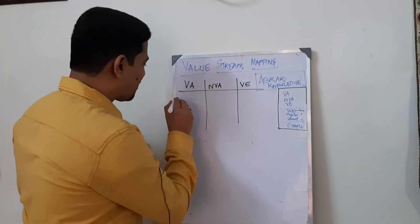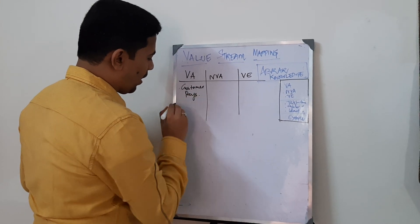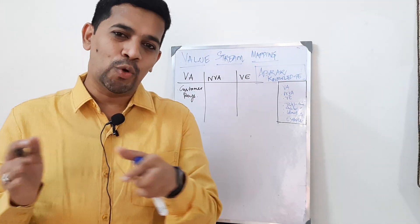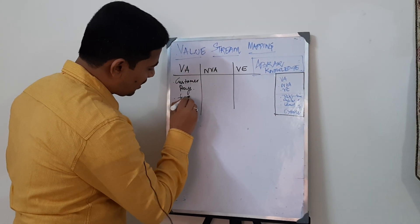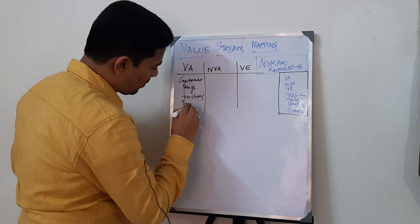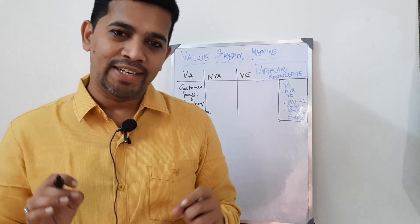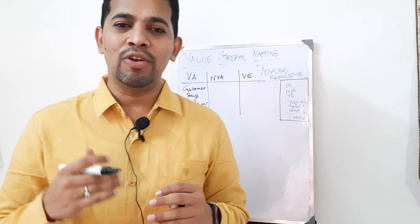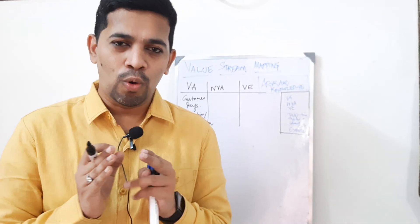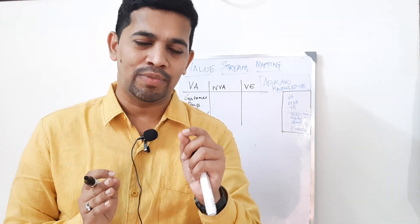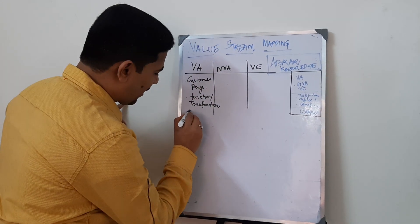Value added has got three things. First, the customer pays for it. Second, anything which transfers the input to output — functions or transformations will take place. Third, the last one is do it right at the first time. In value added, even if you talk about scrap, second pass yield, third pass yield, or first pass yield — it always talks about doing it right at the first time. That means there is no room for scrap, rejection, and all that.